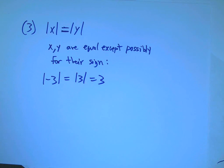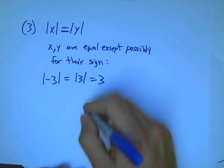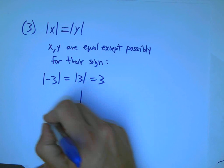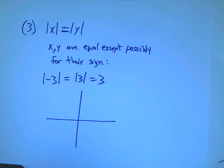For example, it's true that the absolute value of minus 3 is the same as the absolute value of 3. They're both 3. But the x and y themselves are not equal.